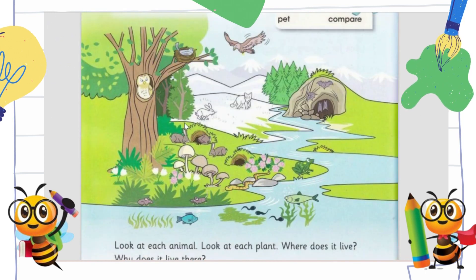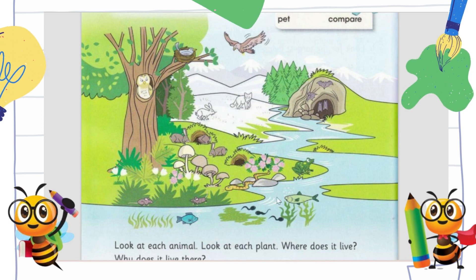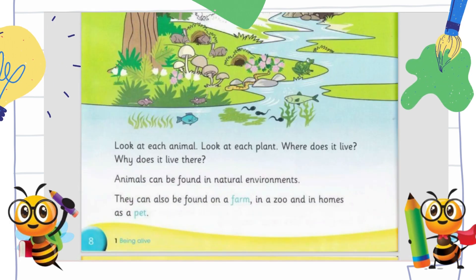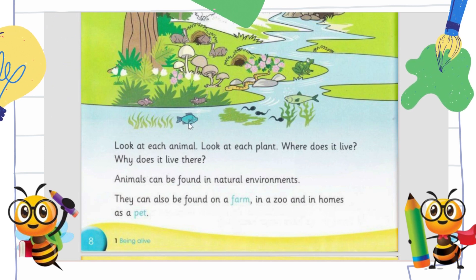Moving on — in the pictures you can see trees, mountains, sparrows, a sparrow's nest, an owl, plants, fish, an island, a cave, a bat, a rabbit, flowers, and a snake. Most of what we are seeing are living things in a living environment. Look at each animal and each plant — where does it live, and why does it live there?